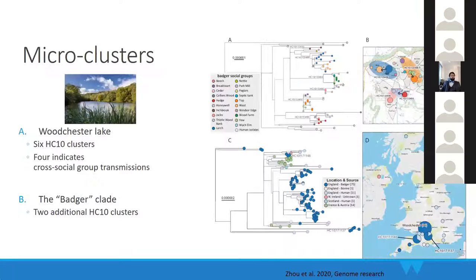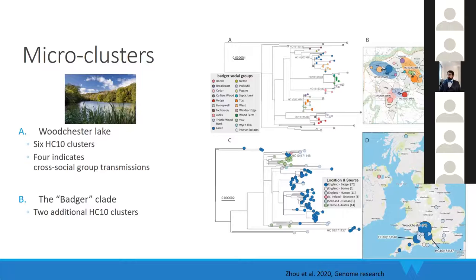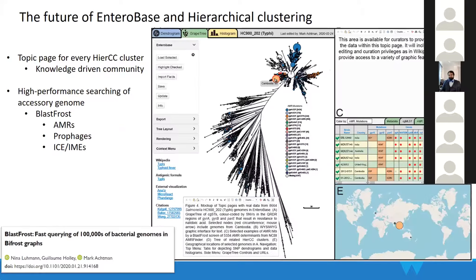Going even deeper into the Worcestershire data: by mapping genomes with their GPS coordinates, we see distinct tiny groups consistent with hierarchical clustering clusters differing by only 10 alleles, forming separate groups with clear transmission chains within each. This demonstrates fine-scale transmission tracking. The same approach applies to human foodborne outbreaks, and hierarchical clustering has already been used in several outbreak reports.